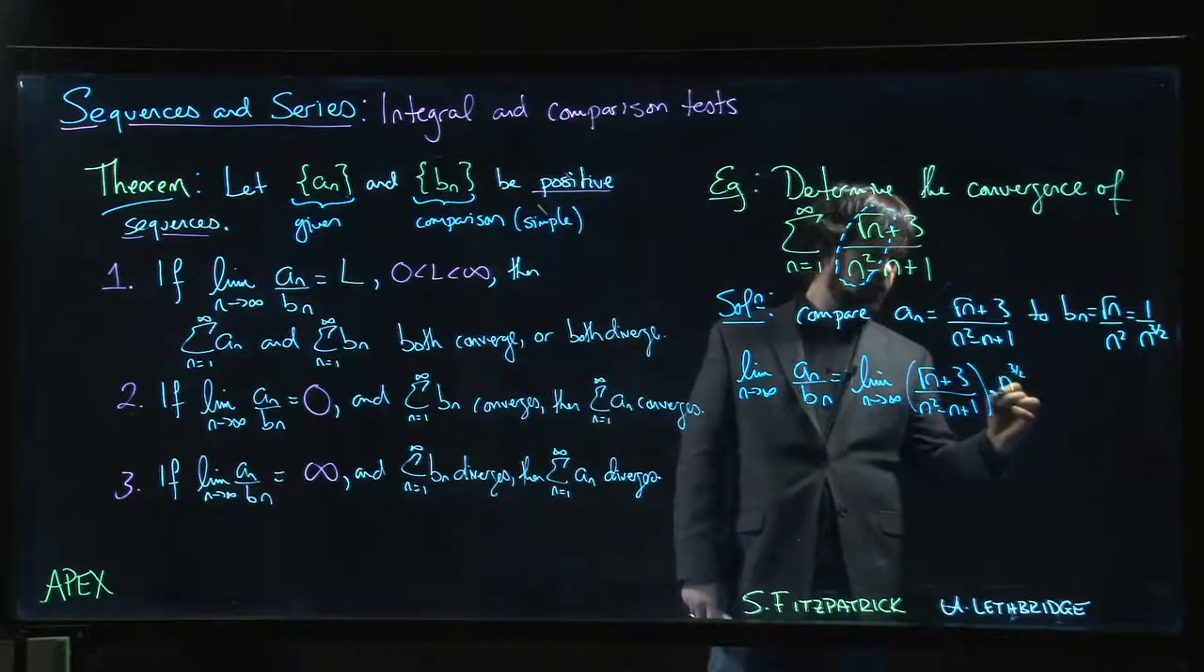And we're dividing by b_n, which means multiplying by n to the 3 over 2.